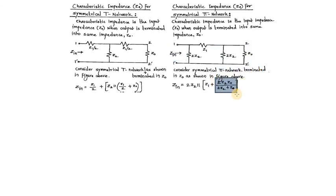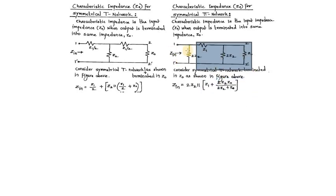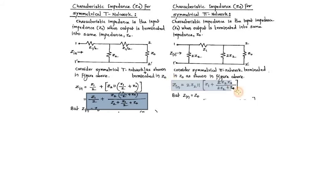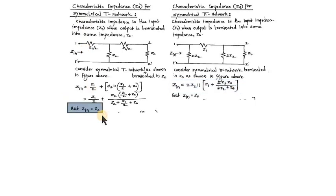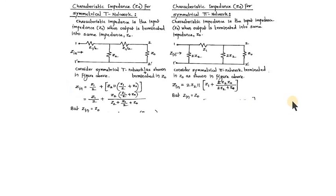To find Zin for the pi network, these two branches are in parallel, so their parallel combination is 2Z2 times Z0 upon 2Z2 plus Z0. Then this parallel combination is in series with Z1, and the whole thing is in parallel with 2Z2. After further simplification, we get an expression for Zin. According to the definition of characteristic impedance, Zin must equal Z0, so I substitute Z0 in place of Zin in both cases.